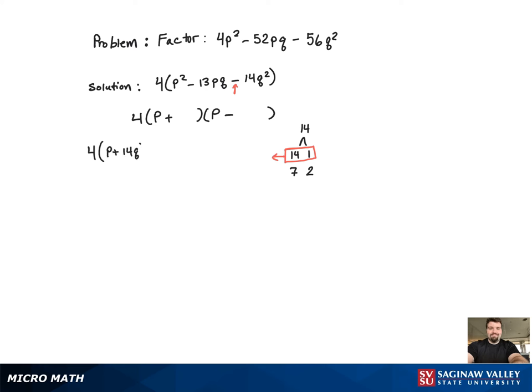Now we have a decision to make. It can either be this version or this factored version. We determine which by looking at the sign of the 13 in the trinomial.